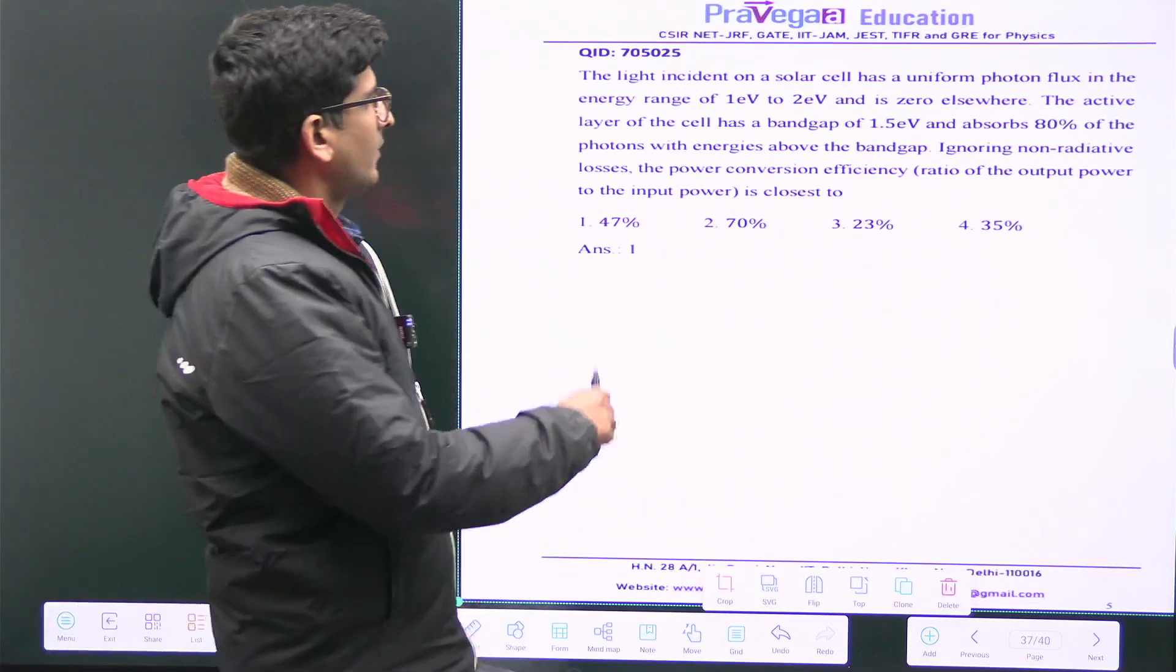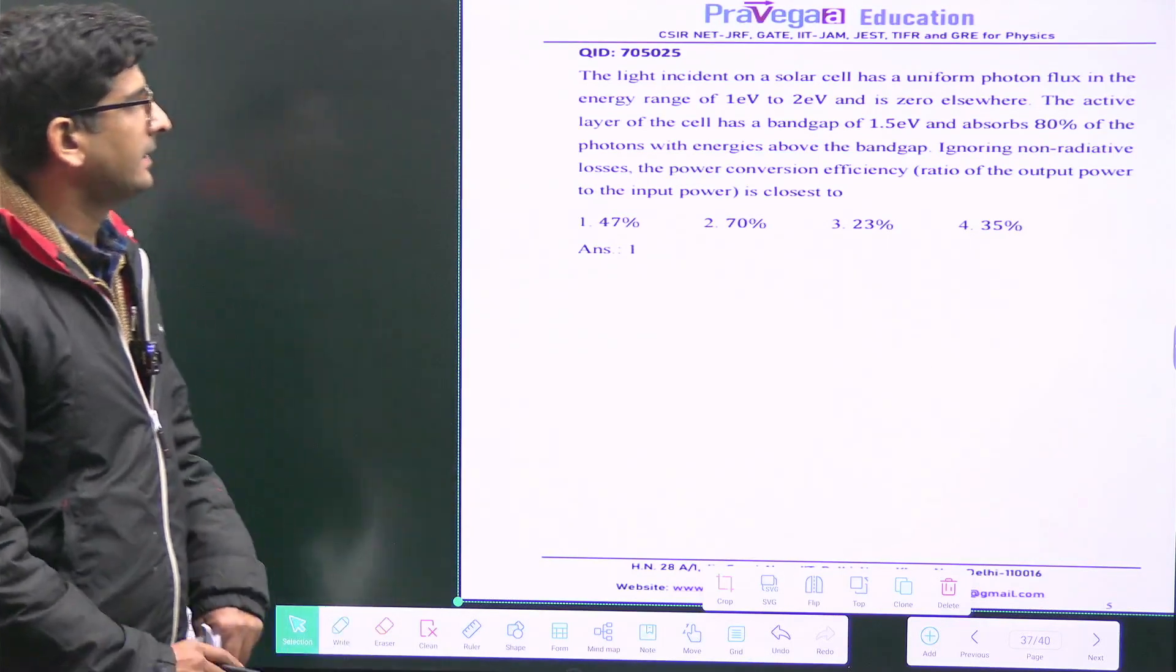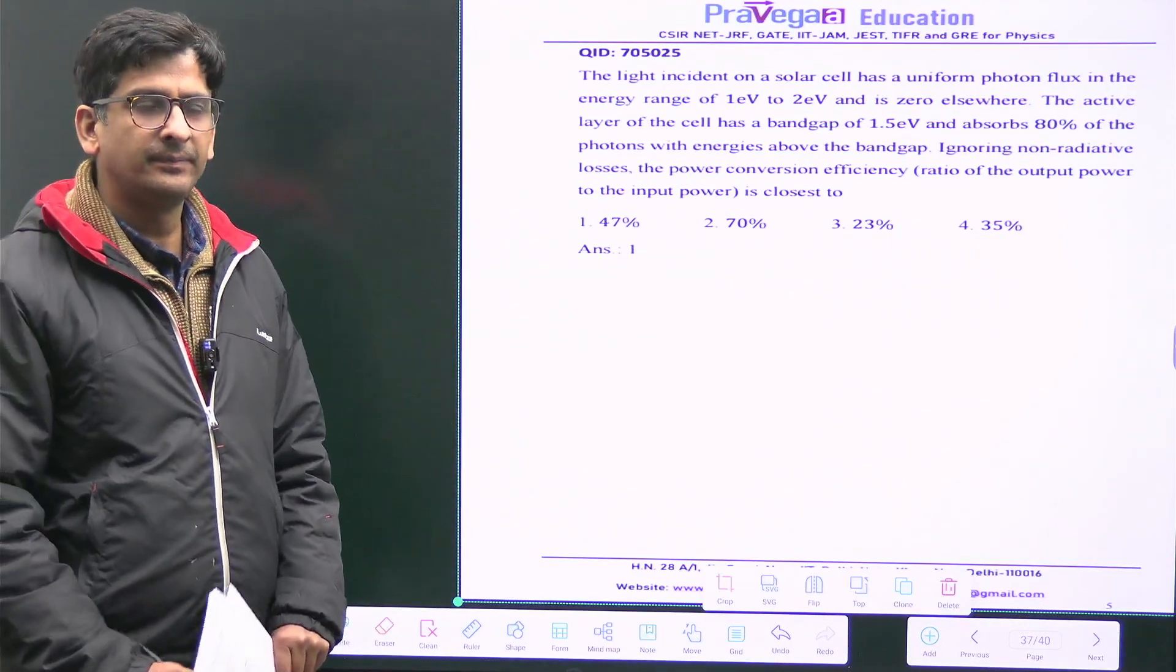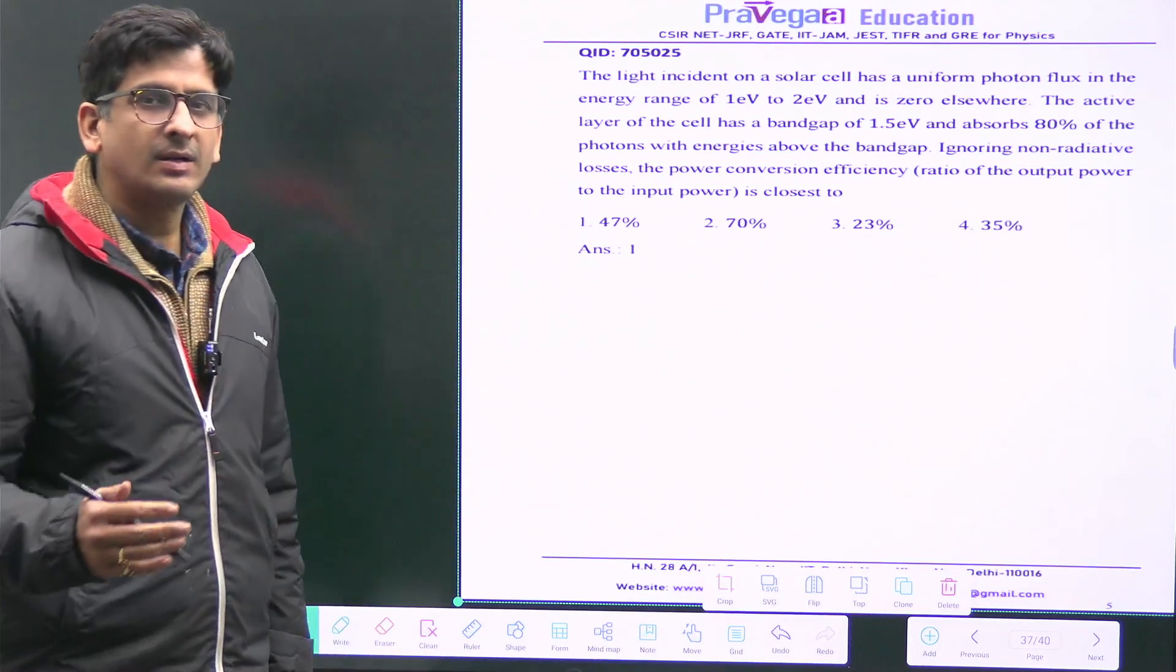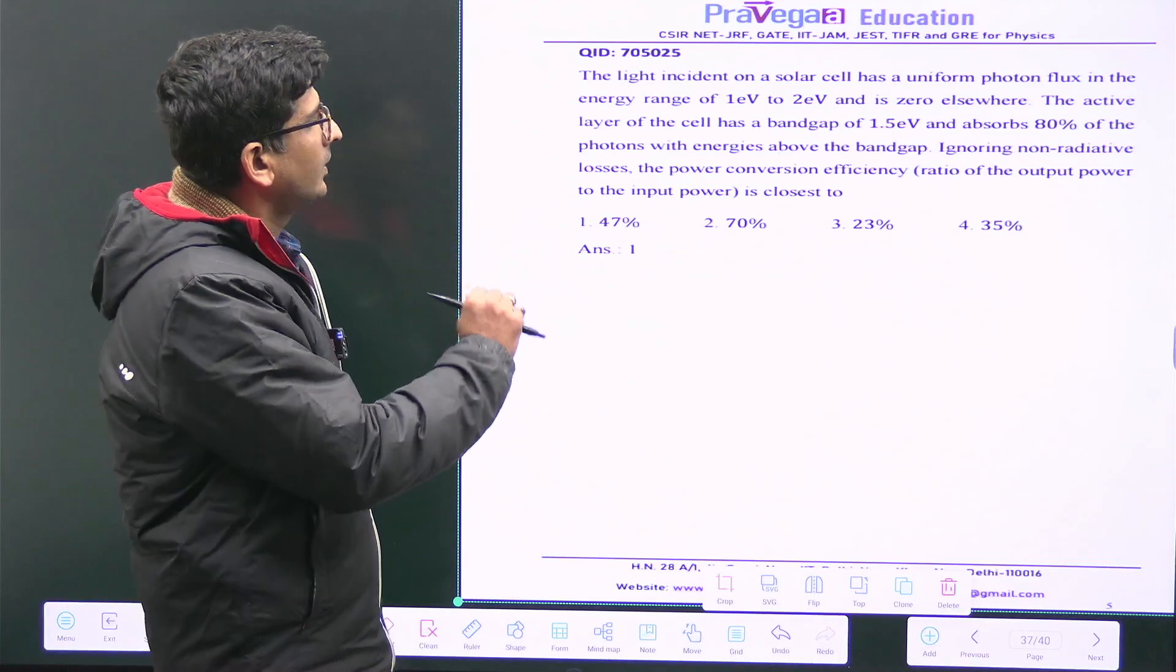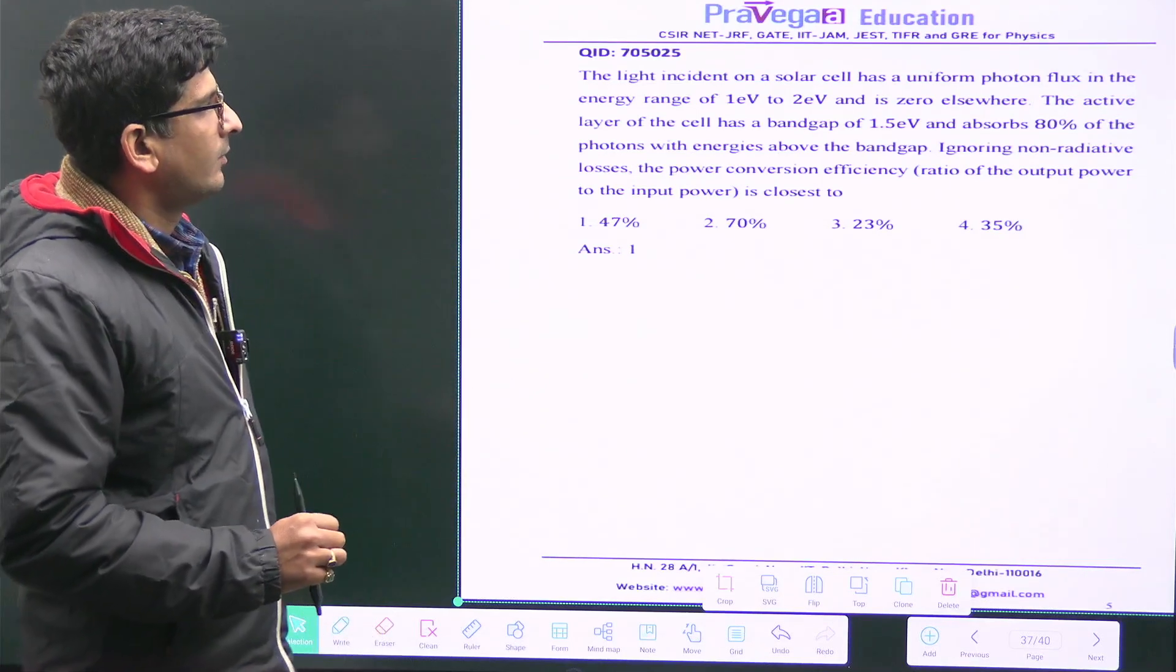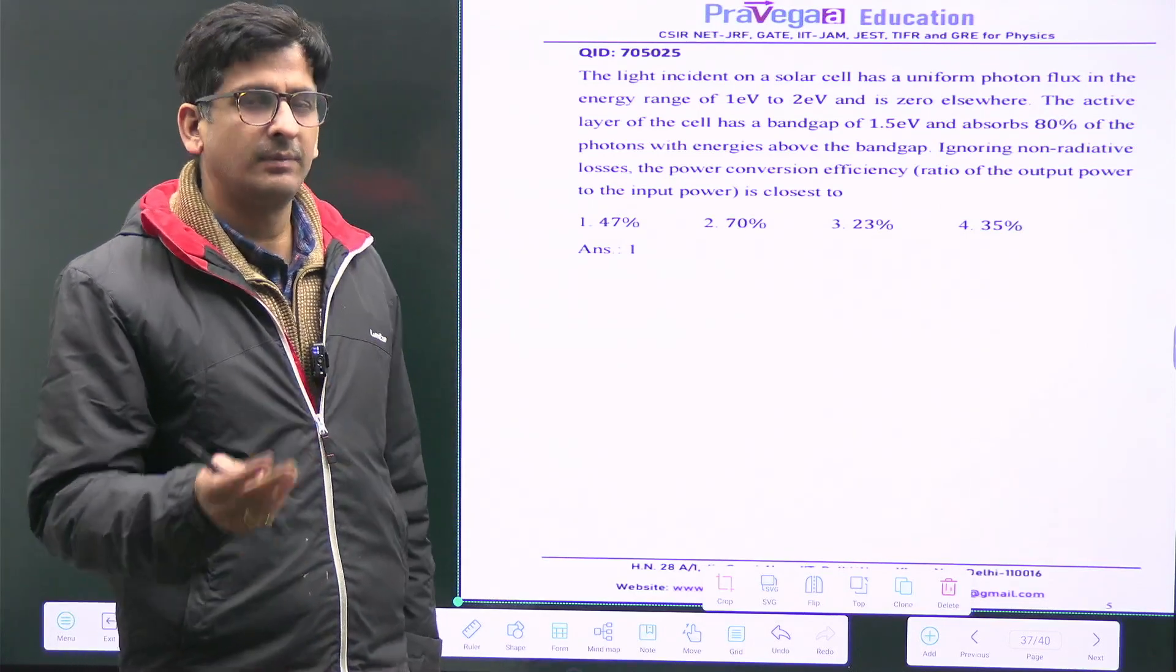Okay, so this is a question which was asked in NET December 2023 and the question is based on a simple concept of averages. In this question, what they have given is uniform photon flux. Because in real life we have a distribution of photons that is coming from the Sun, but in this case they have given that suppose the photon flux is uniform.